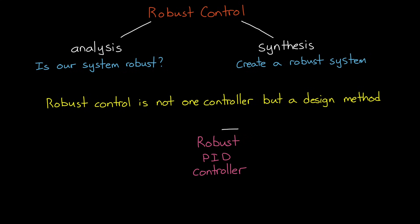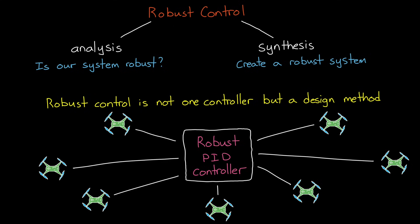In this way, we can design, for example, a single PID controller using robust methods that will hover all of our toy drones. And as long as the drone parameters or dynamics vary within the bounds of our uncertainty, then we have confidence that it's going to work.